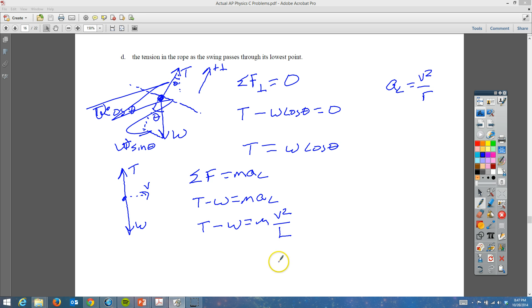And at this point, we can say T minus W is equal to M times V squared all over - and then L is our length. At this point, we have to stop because we don't know conservation of energy yet. We've not been through energy. So at this point, you would only get two more points. One of those points would come from this AC is equal to V squared over R, and the other one would be from the expression that we have here. And at that point, we're going to stop with this problem.